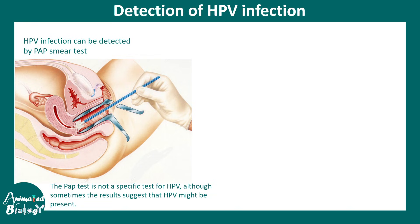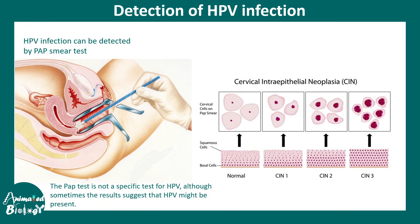Detection of HPV can be done using the Pap smear test. It's not a specific test for HPV but indicates whether there is carcinogenic progression in the cervix. Cervical epithelial cells are spread on a slide and their morphology is tracked by a pathologist. If there is cancerous progression, koilocytic cells with a large nucleus would be observed.